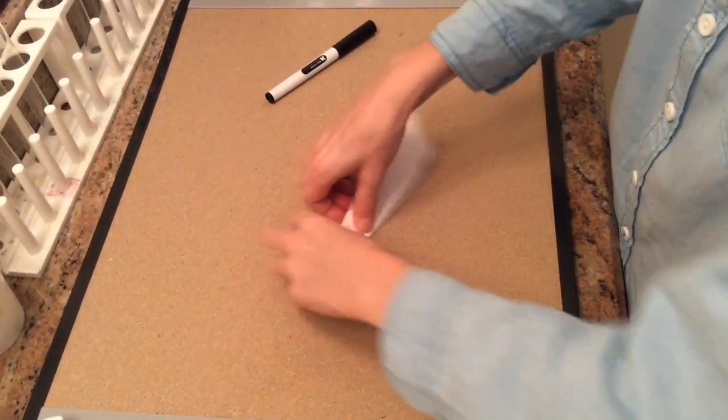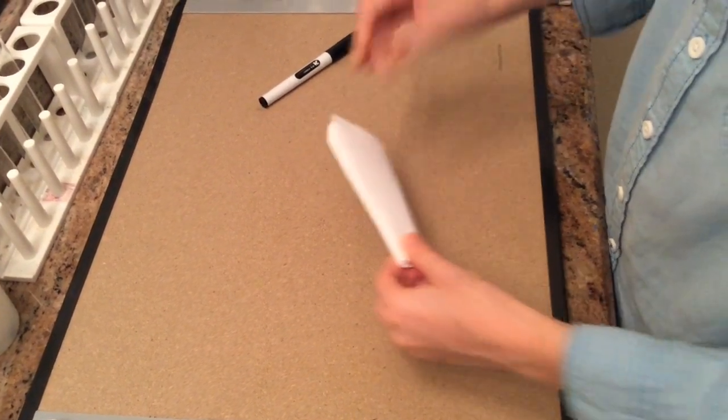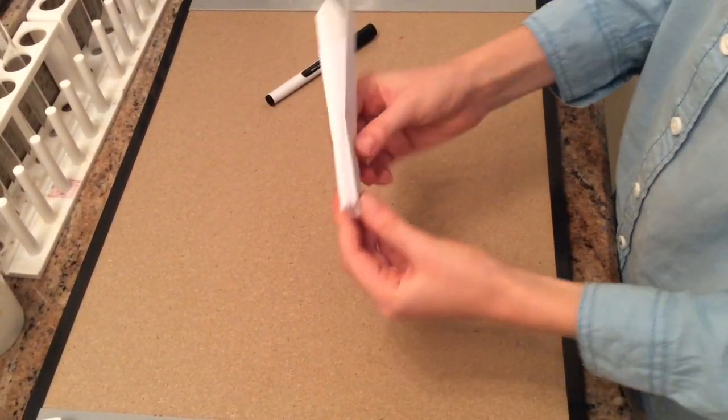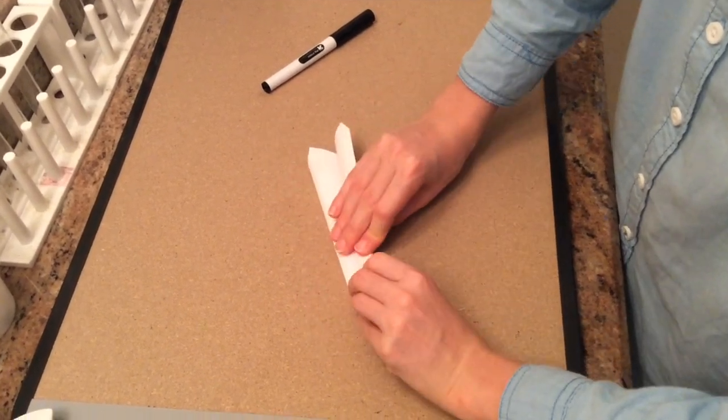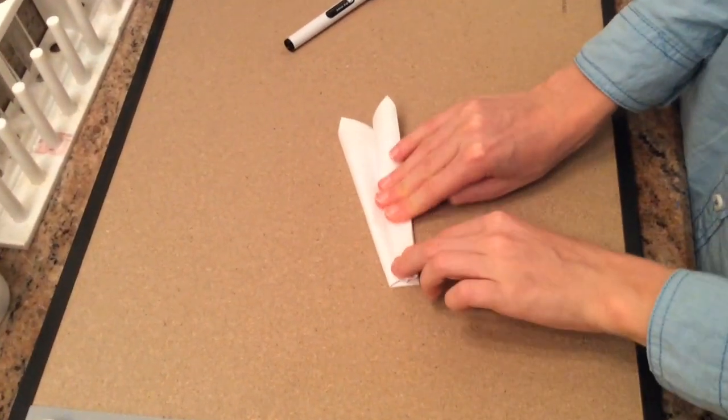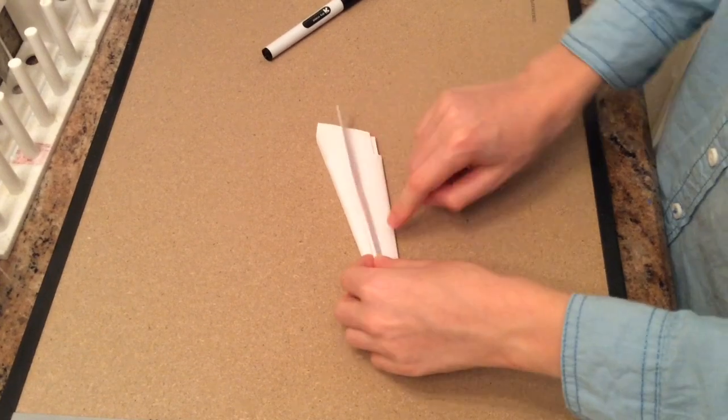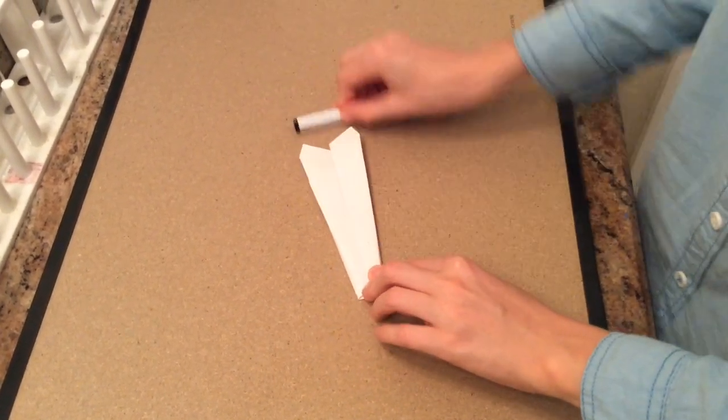Now we'll fold them up and we have this almost paper airplane. Now we'll take what is going to become our wing and fold it down to the body of the paper airplane. So right there at the bottom and crease.